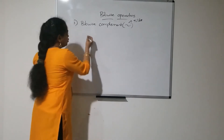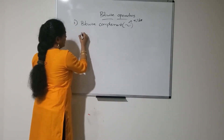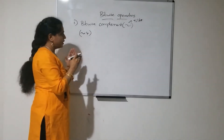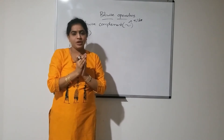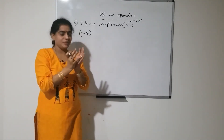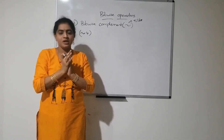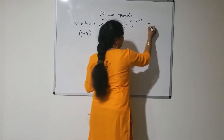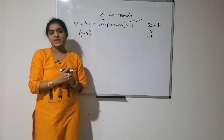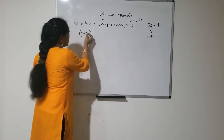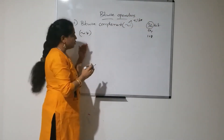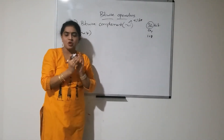How to perform a complement operation? Suppose I want to perform complement operation for 4, written as tilde of 4. Here we have to follow some rules. Generally, 4 is an integer number, and if you want to store an integer number in memory, the integer representation will be in a 32-bit format in the memory.